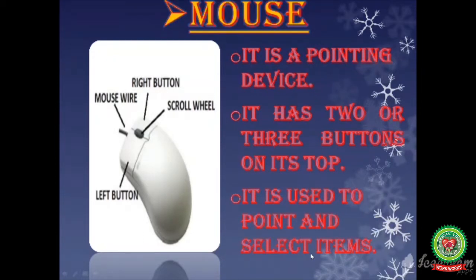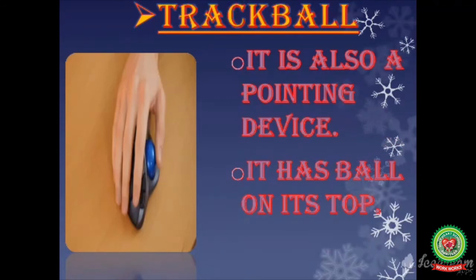The mouse is a pointing device. It has two or three buttons on its top — a left button, right button, and scroll wheel. It is used to point and select items. Next we have the trackball, which is also a pointing device. It has a ball on its top, and we can roll the ball with our finger to move the pointer on the screen in any direction.